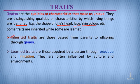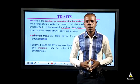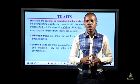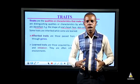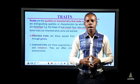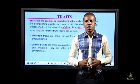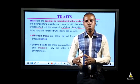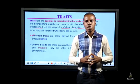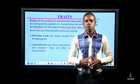Inherited traits are traits passed from parents to children through genes, while learned traits are traits that are acquired by imitation and practice. They are often influenced by culture and the environment. These different traits can be grouped into different types for easy understanding. Let us look at the types of traits.